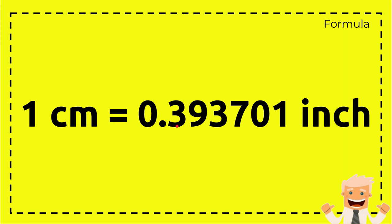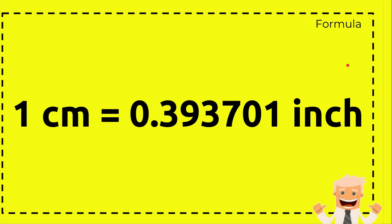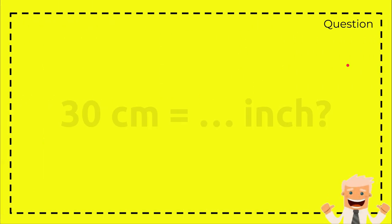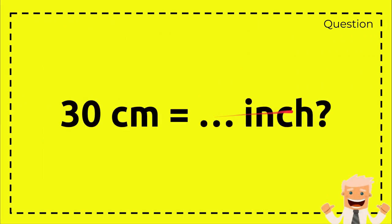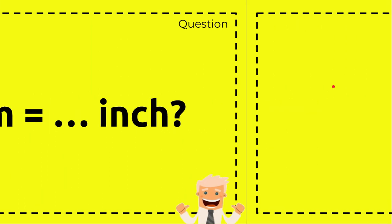One centimeter equals 0.393701 inch. And here's the question: 30 centimeters equals how many inches? That's the question we have.